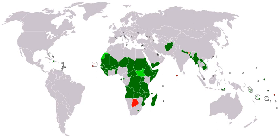The UN has developed the Human Development Index, a compound indicator of some of the above statistics, to gauge the level of human development for countries where data is available. The UN had set Millennium Development Goals from a blueprint developed by all of the world's countries and leading development institutions in order to evaluate growth. These goals ended in 2015, to be superseded by the Sustainable Development Goals. The concept of the developing nation is found, under one term or another, in numerous theoretical systems having diverse orientations — for example, theories of decolonization, liberation theology, Marxism, anti-imperialism, modernization, social change and political economy.